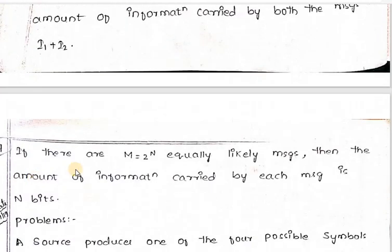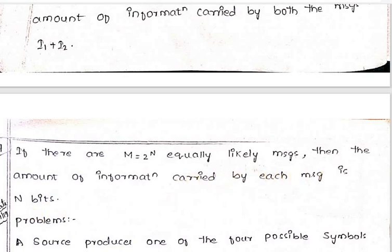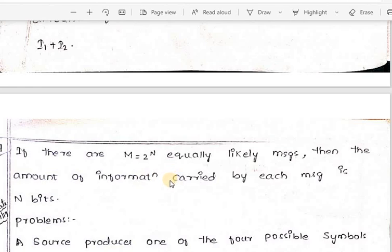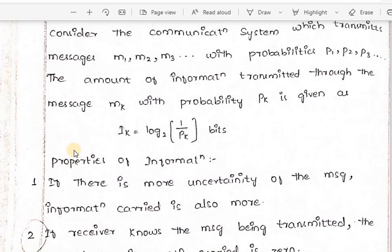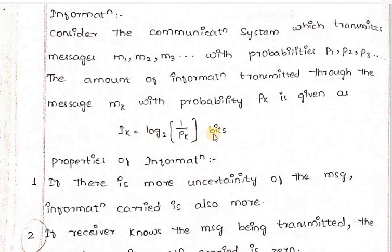The fourth property: if there are M = 2^n equally likely messages — meaning for a bit size of n, you get equal numbers of 1s and 0s — then the amount of information carried by each message is n bits. So if M = 2^n equally likely and independent symbols are transmitted, the information carried by each is n bits. The key formula remains I(k) = log₂(1/pk) bits.